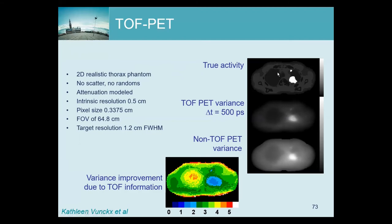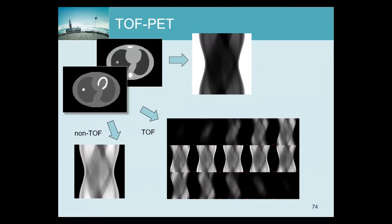This means TOF provides greater benefit for large patients than small patients, because in large patients lesions of interest are typically surrounded by more activity. TOF also helps more when the target has less activity — exactly the clinically relevant case, since very hot spots are visible in any patient, but subtle, low-uptake changes are the hardest to detect. TOF also has an interesting effect on reconstruction convergence.